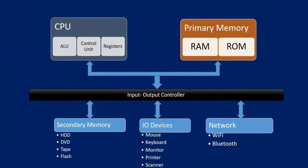Now, before going into a discussion of the CPU, let's see how these components communicate with each other. On the motherboard there is an input and output controller, and everything is connected to that controller. It controls the communication and what they can access. The CPU and RAM are connected with that controller; on the other side, secondary memory, I/O devices, and network devices are all connected to that controller.